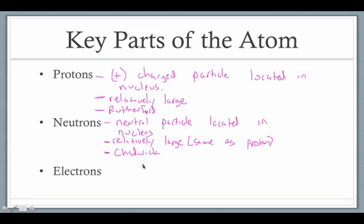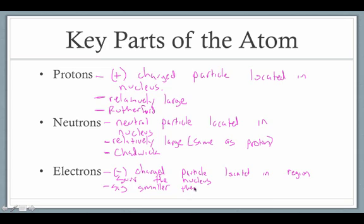Our last subatomic particle we're going to be worried about this year is the electron. The electron is a negatively charged particle located in the region surrounding the nucleus. It is significantly smaller than a proton or a neutron, approximately 2,000 times smaller. And then finally, again, to tie it back into our history, the electron was discovered by J.J. Thompson. Not only did he discover the electron, but he also discovered subatomic particles in general. So he's the person that got this whole process up and running.